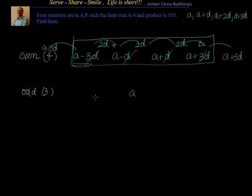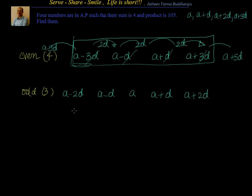For odd numbers, the idea is to make d cancel. So take a, a minus d, a plus d. If you add all three, the d terms cancel and you get 3a. For 5 numbers, extend the same way. Whatever conditions are given — sum, sum of squares, product — you can easily solve them using this pattern.